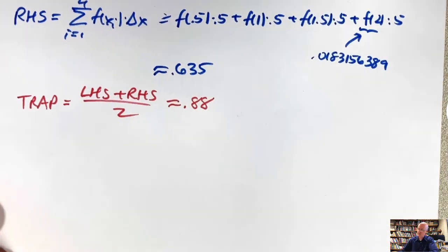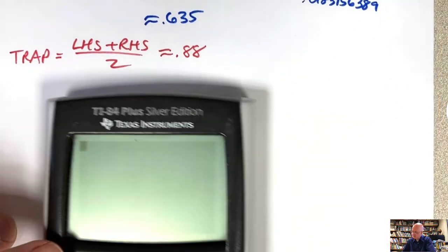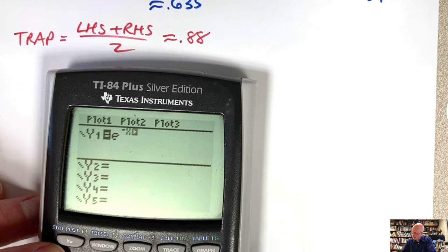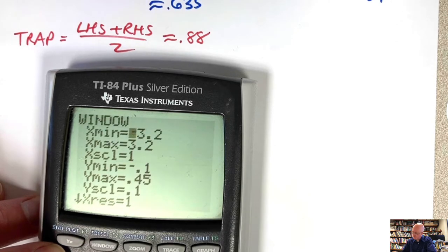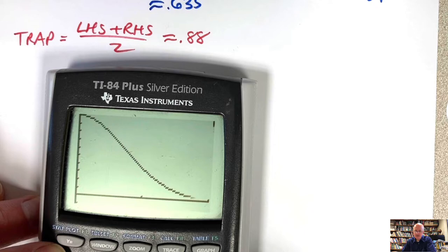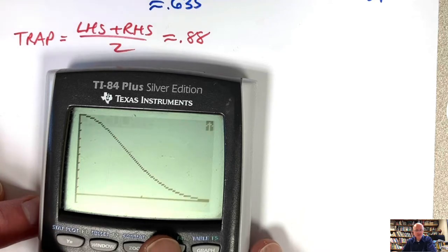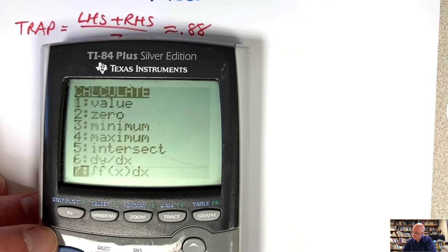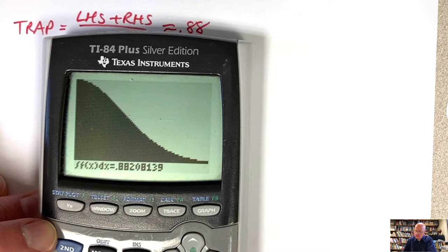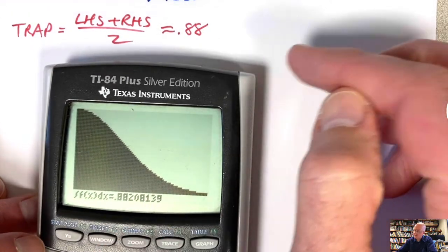Using the calculator to find the true value: graphing e to the negative x squared over 0 to 2, we then compute the definite integral numerically. The calculator gives a value that rounds to 0.88 at two decimal places — the trapezoid rule is doing very well here.